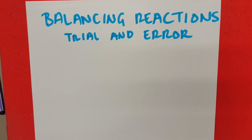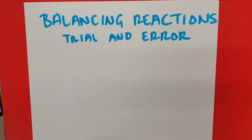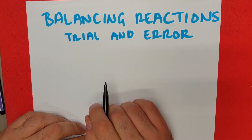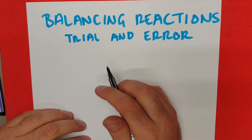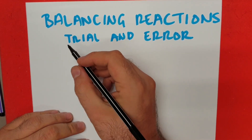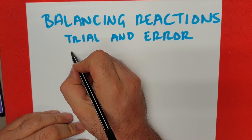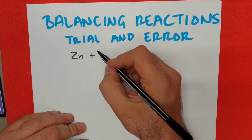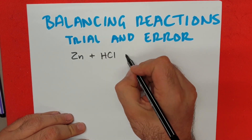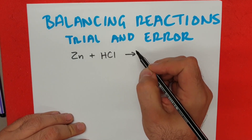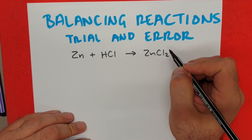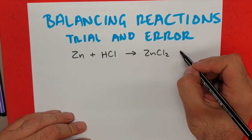The next topic of this little brief chemistry tutorial is balancing reactions by trial and error. Let's begin with the simplest of simplest. We have a reaction where we're using zinc that reacts with hydrochloric acid to produce zinc chloride and hydrogen gas.